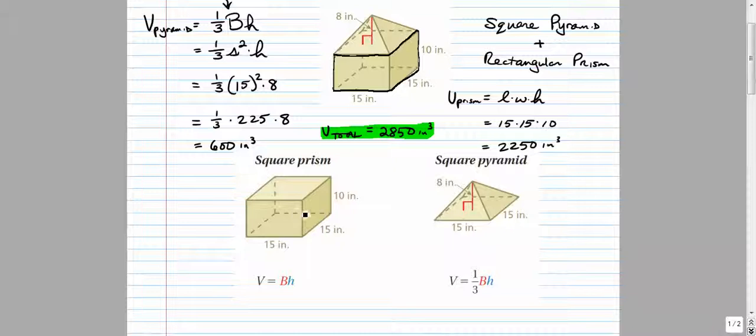Alright, they're calling it a square prism because the bottom is a square. Alright, but we know that all squares are rectangles as well. So there's a nice breakdown for you, how they actually break it up into the sub-volumes. Alright, cool.